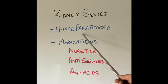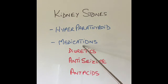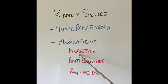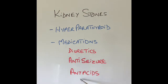Other risk factors include hyperparathyroidism, a condition where small tumors develop in the parathyroid glands next to the thyroid, causing more calcium to pass in the urine. Certain medications also increase risk, including some diuretics (water tablets), epilepsy medications, and certain over-the-counter antacids that contain high amounts of calcium — especially when taken in large amounts without drinking enough water.